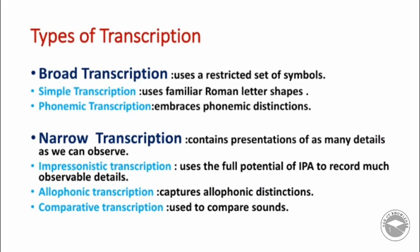Now we move to the last topic in phonetics: types of transcription. Transcription is generally divided into two types — broad and narrow. Broad transcription uses a restricted set of symbols, and simple transcription uses familiar Roman letter shapes such as A, O, E. Phonemic transcription is a transcription that embraces phonemic distinctions — it only shows differences between phonemes and does not deal with allophones.